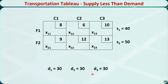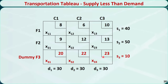For the tableau representation, when we introduce a dummy supply F3, we are actually adding one row to the original transportation tableau. These are the penalties, and this is the dummy supply amount.